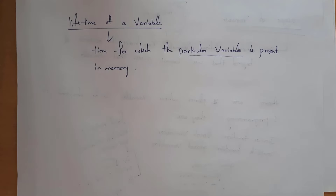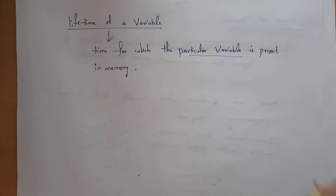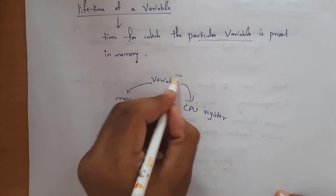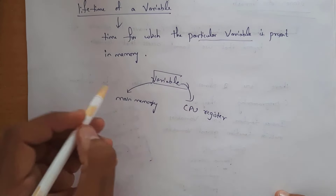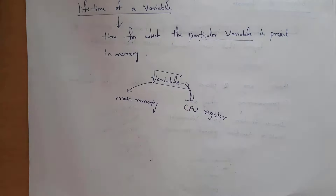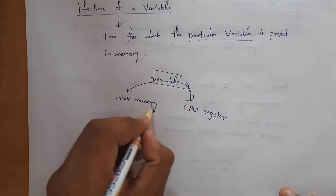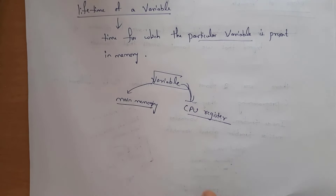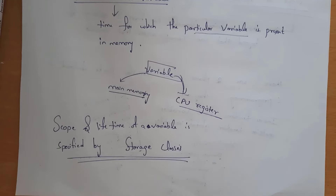For a local variable, its existence is only inside that block. Whereas for a global variable, its existence is present for the entire program. Lifetime of a variable is the time for which a particular variable is present in our memory. We can store a variable either in main memory or in a CPU register — these are the two storage locations.